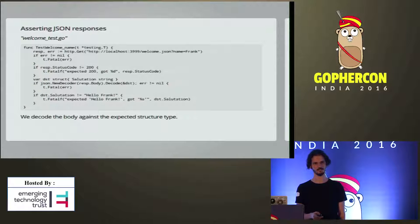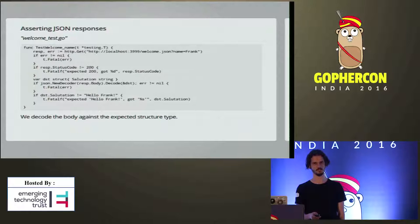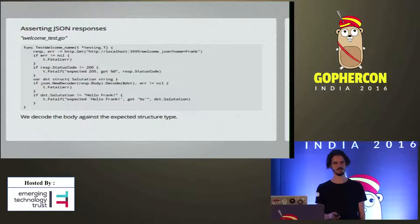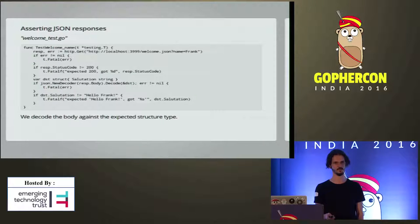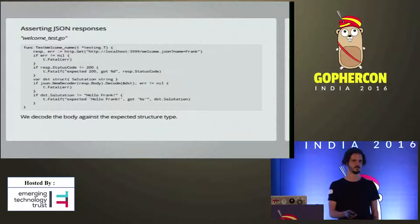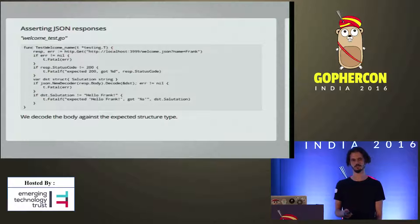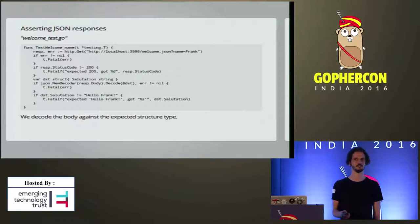There's one thing I don't really like about these tests: they make an assumption which might not be true. The HTTP GET method assumes there's a server running at localhost 3999. But if the server isn't running, the test will fail, which doesn't correctly reflect the state of the program, because the program might be correct. So it's best to make sure during the test that you have a server running, and ideally not the server that your visitors access.